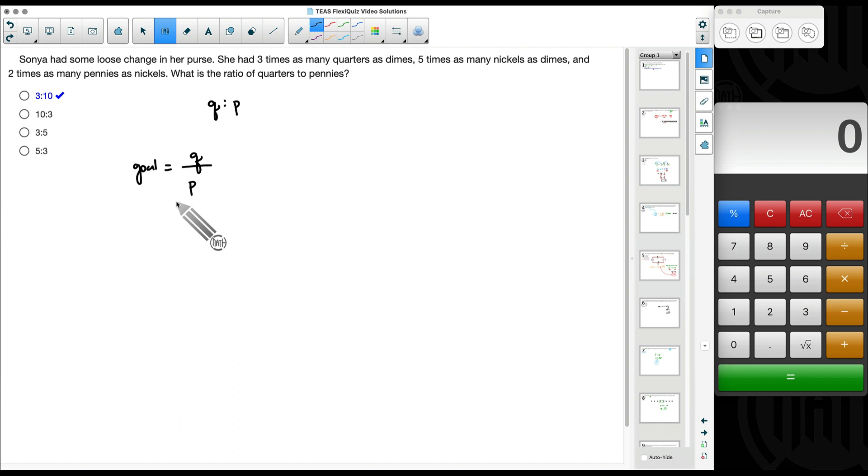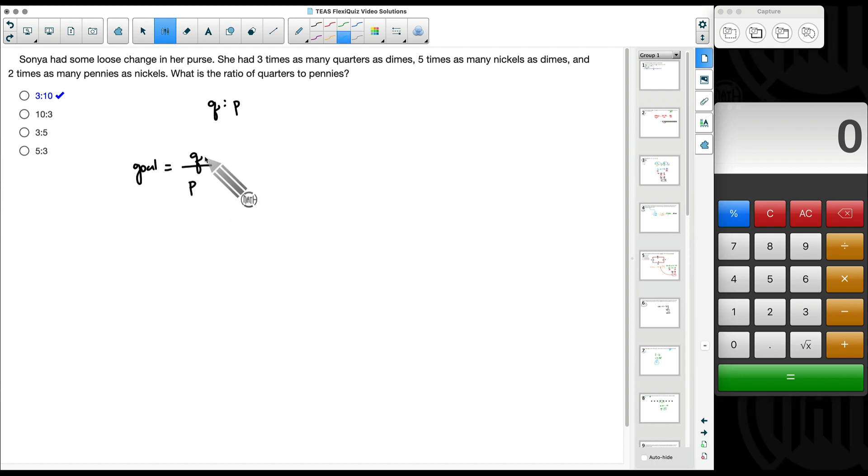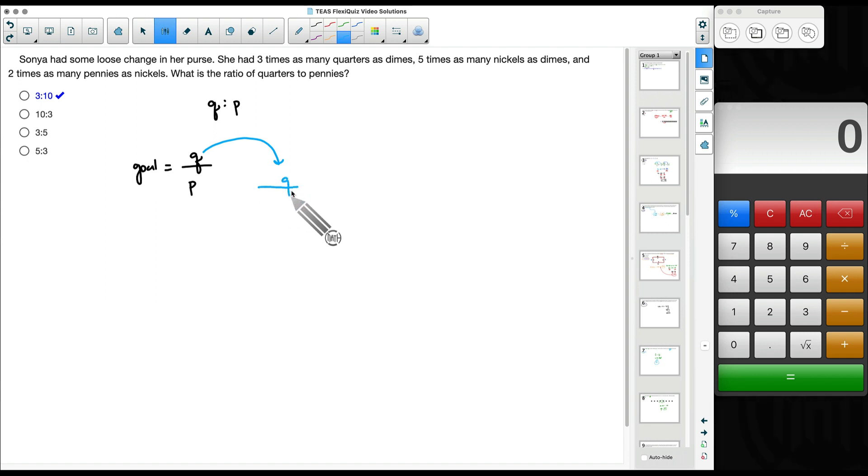And I'm going to show you a dimensional analysis approach in this video solution. But also if you look at the solution to this problem, there is a link to another video I have on YouTube that shows a different approach. So I encourage you to check out both ways and see which one works better for you. Now since our goal is quarters to pennies, I'm going to start off my dimensional analysis with something that we know about quarters.